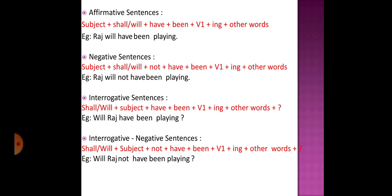To make it negative: 'Raj will not have been playing' — we add 'not' between 'will/shall' and 'have.' For the interrogative sentence: shall/will comes first, then the subject, then 'have been,' then the verb with '-ing,' then other words, plus question mark. For example: 'Will Raj have been playing?' Remember, 'will' or 'shall' comes first and the subject comes later. For interrogative negative: 'Will Raj not have been playing?' — we use 'shall/will' before the subject and 'not have been' after the subject.